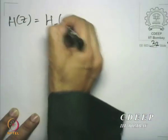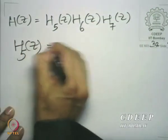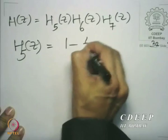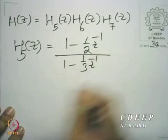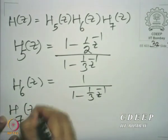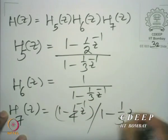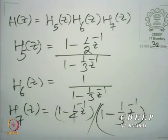You could have still other variations. H(Z) could be written as H5(Z) times H6(Z) times H7(Z), where H5(Z) is (1 minus half Z-inverse) divided by (1 minus one-third Z-inverse), H6(Z) is (1 minus one-third Z-inverse), and H7(Z) is (1 minus one-fourth Z-inverse) divided by (1 minus one-fifth Z-inverse). This gives yet another possibility, and now you can get rearrangements of these — all distinct as system functions — in any manner that you desire, yielding several more combinations.